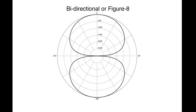The bi-directional or figure eight picks up equally from either side. Ribbon microphones have this polar pattern.